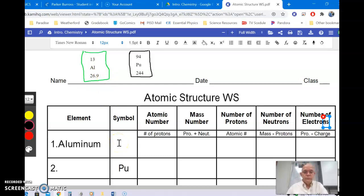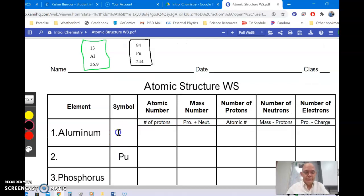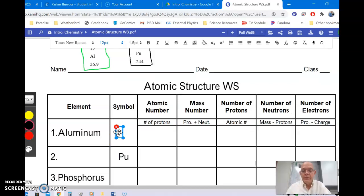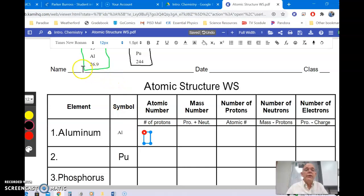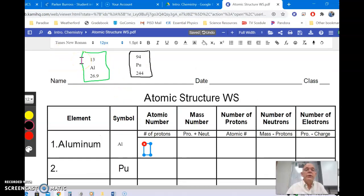So in the first box, you put the symbol. Make sure that you capitalize the first letter, small letter for the second one, if there is a second one. Now for the atomic number, the atomic number is equal to the top number up here, it's a whole number. So we just put 13, because it's just a number.